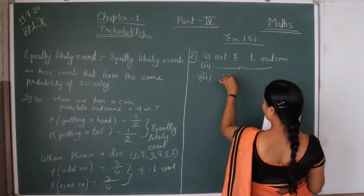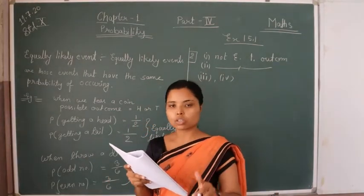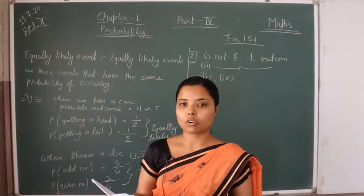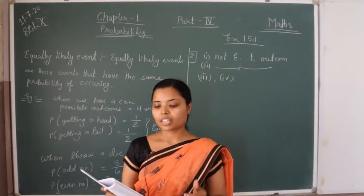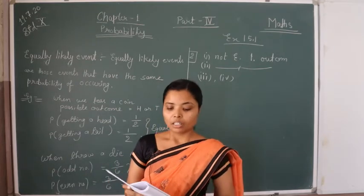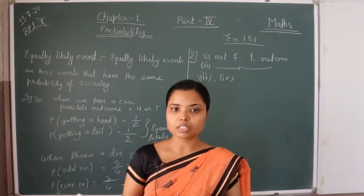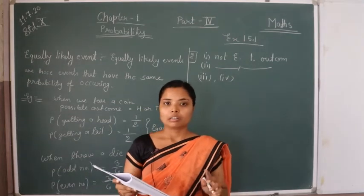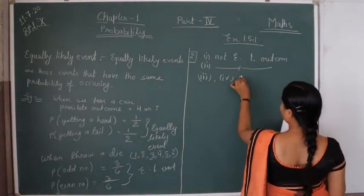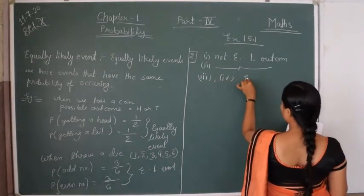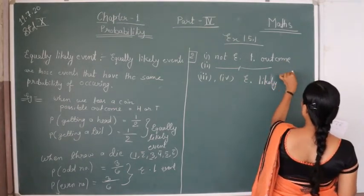Third: a trial is made to answer a true/false question — the answer is right or wrong. There are only two possibilities: the question is right or wrong. So we can say this is an equally likely event. Fourth: a baby is born — it is a boy or a girl. There are also only two possibilities: boy or girl. So question number 3 and question number 4 are both equally likely outcomes.